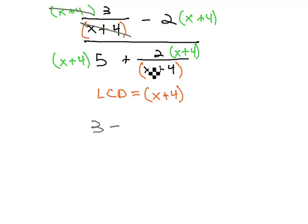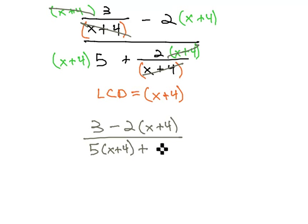We also have minus 2 times the x plus 4 over 5 times the x plus 4, plus the x plus 4's divide out, 2.